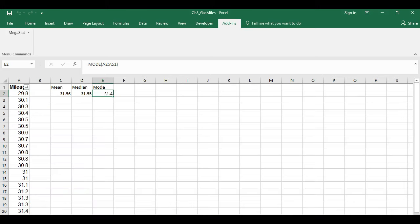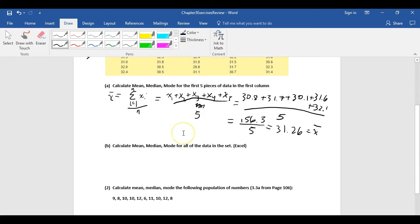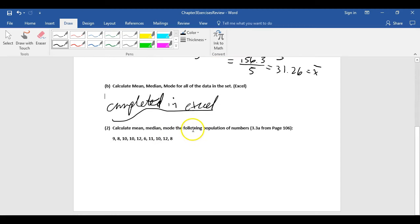Let's go back to our worksheet. We'll just say that this was completed in Excel. And now, we want to calculate the mean, median, and mode with the following populations of numbers. This followed population of numbers, and this is actually number 3.3a on page 106. The first thing I'll do is I'll order these in such a way that it's easy for us to use.